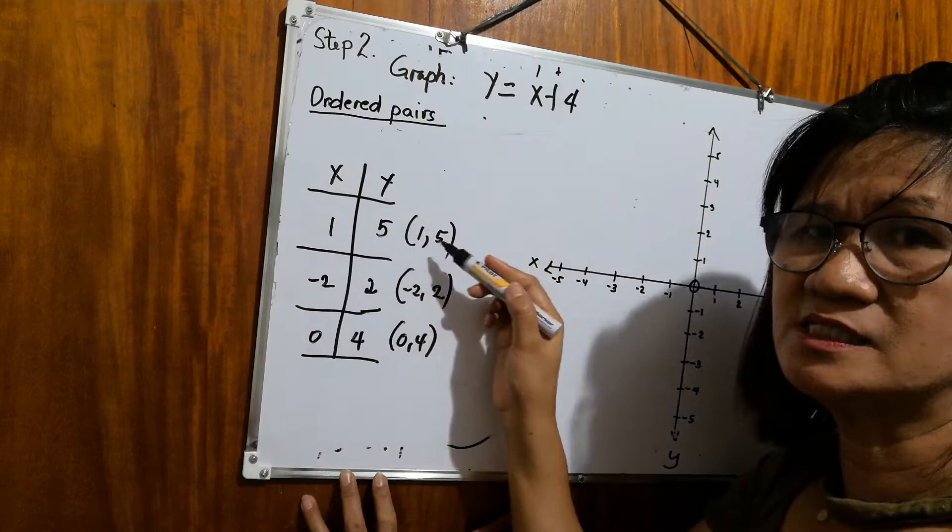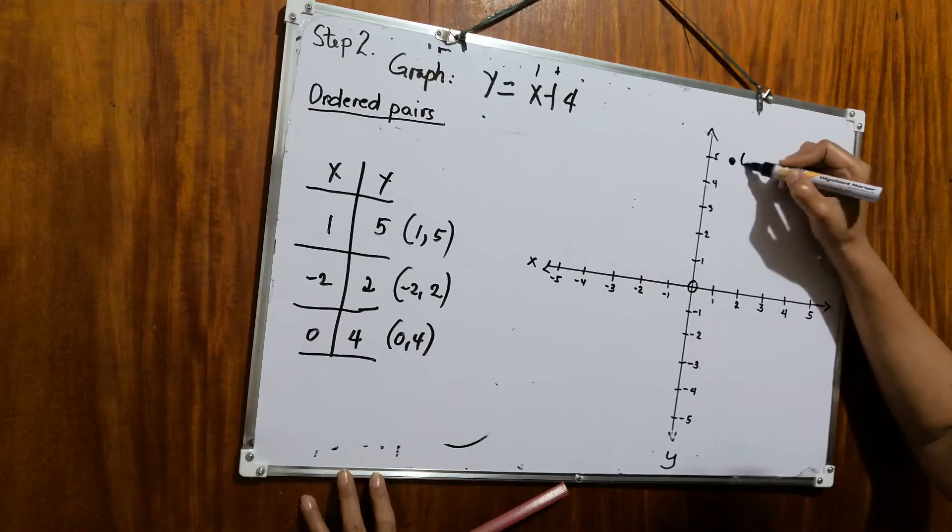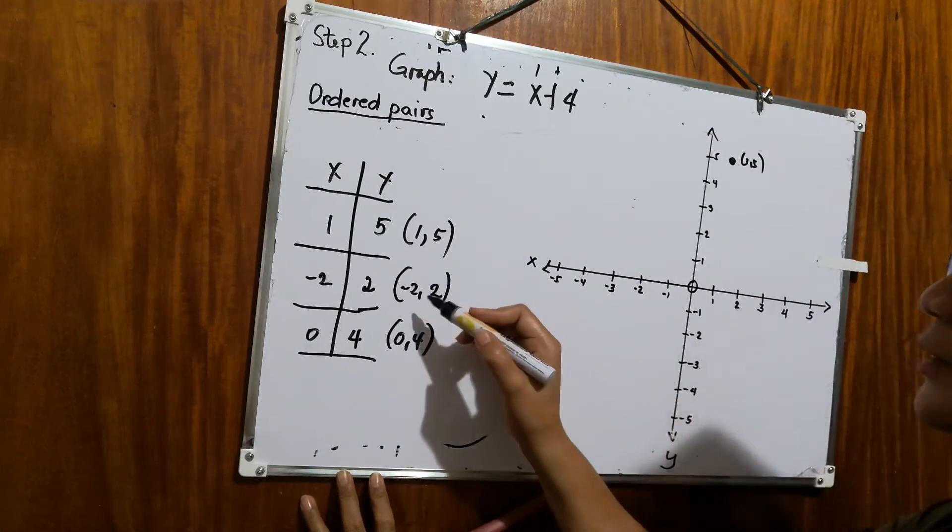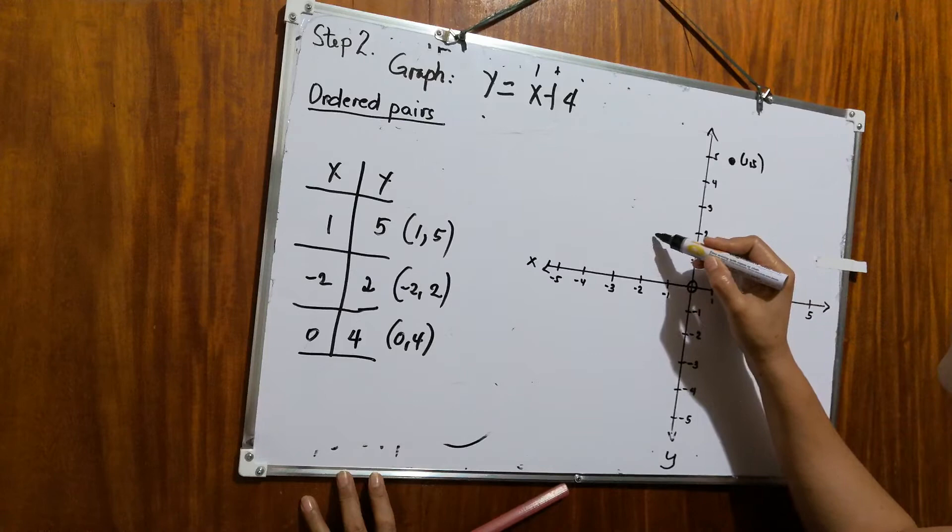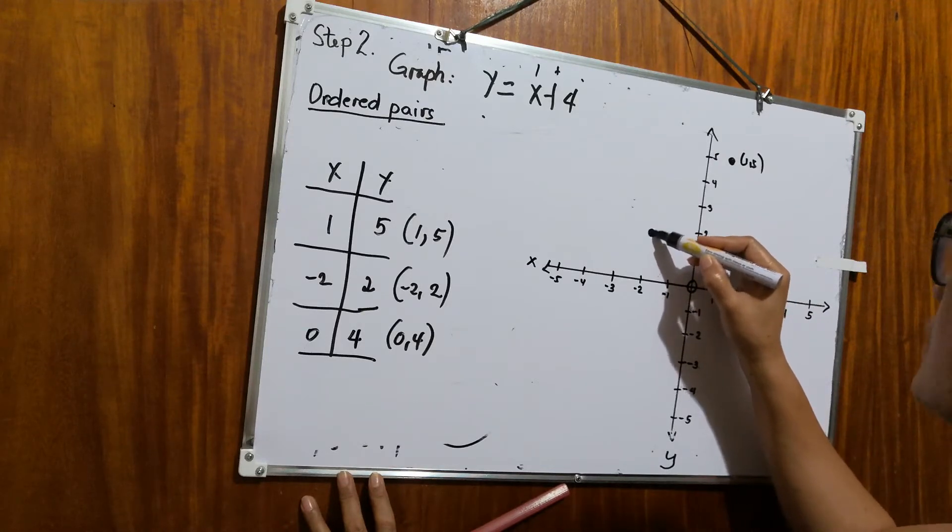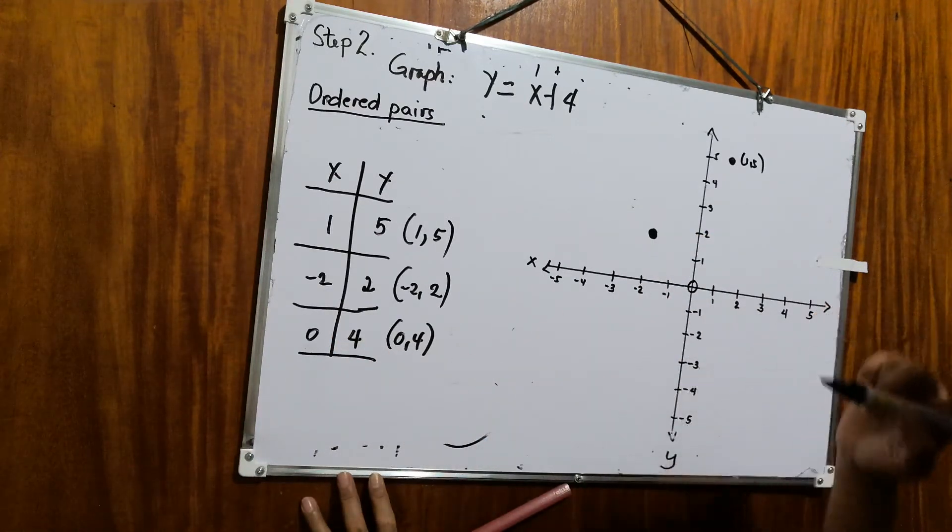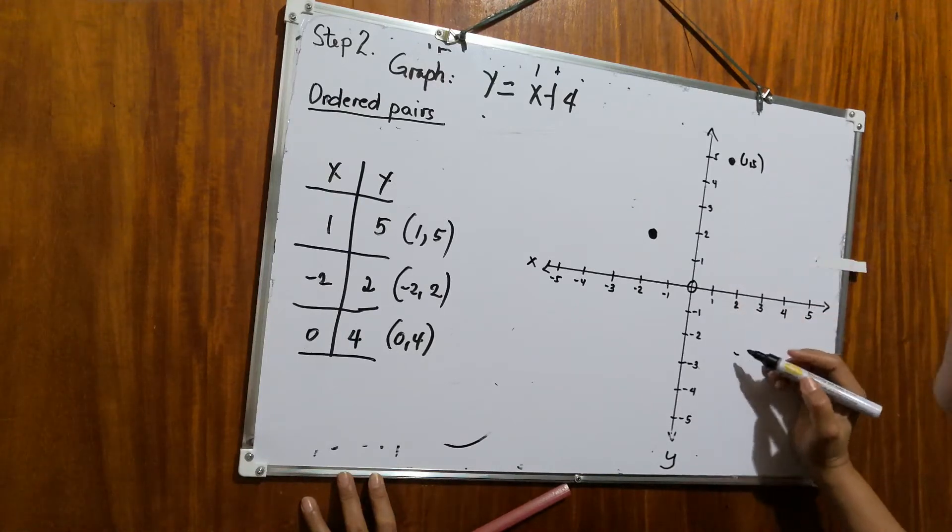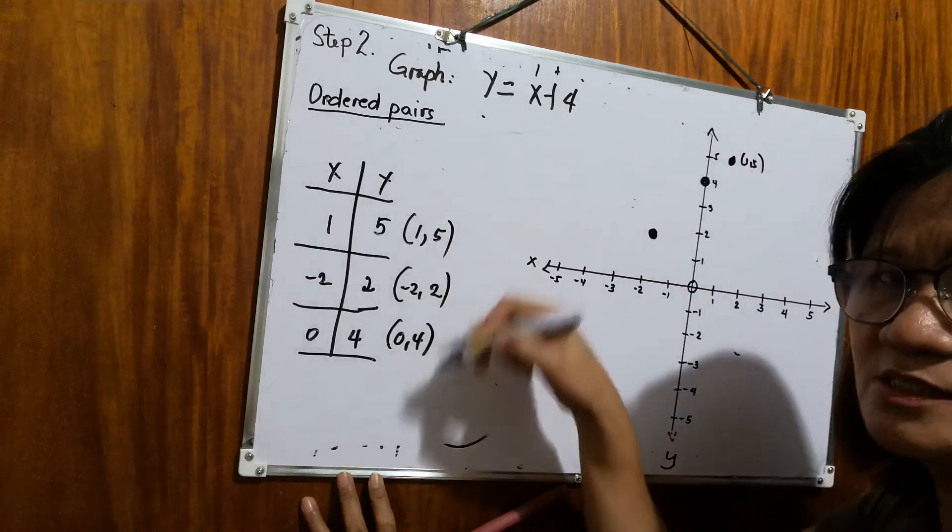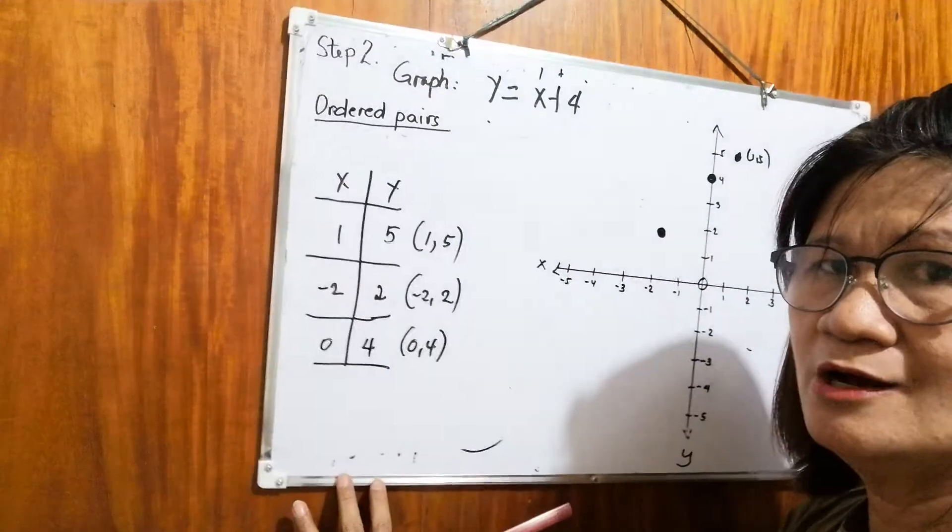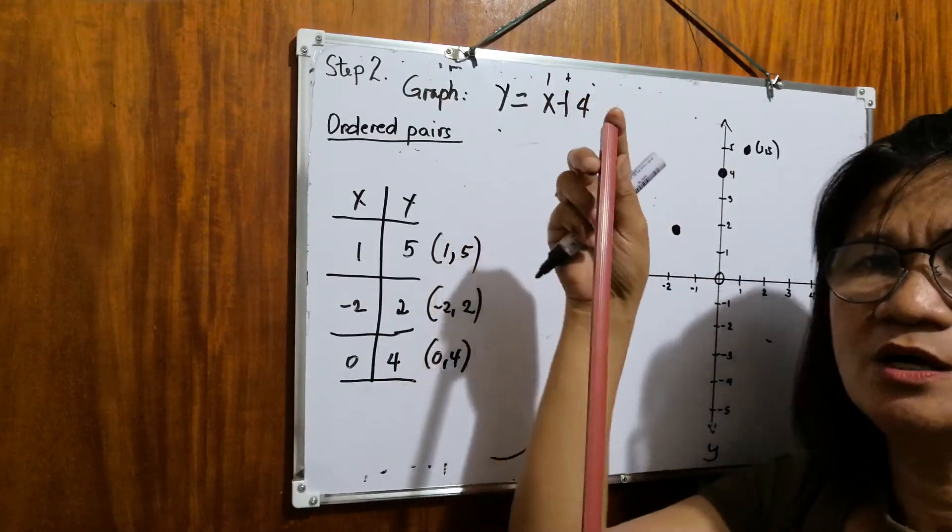So this is in quadrant 1 because both are positive. So 1, 5 is here. After plotting these points, we are now ready to connect. Using your ruler or straight edge, we will connect them.